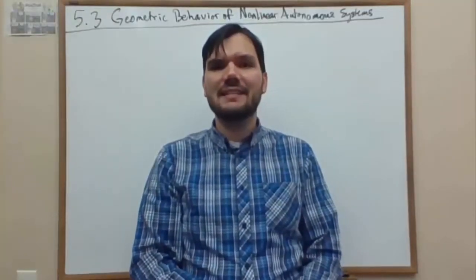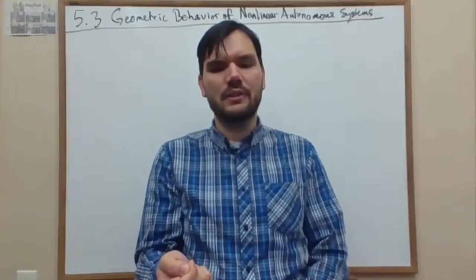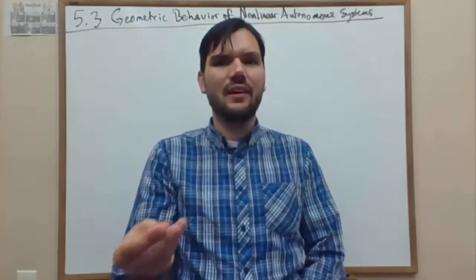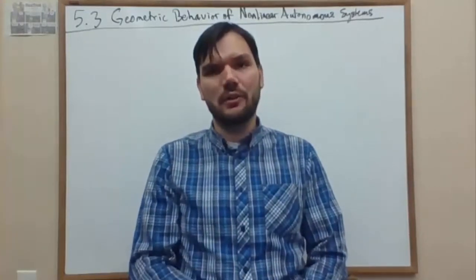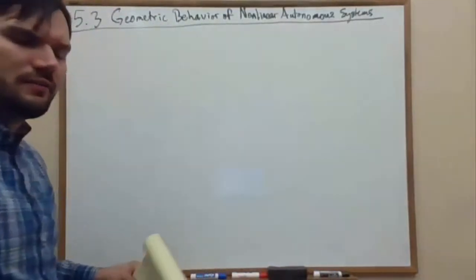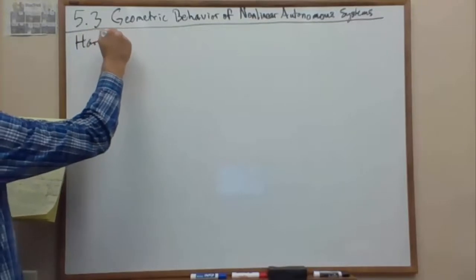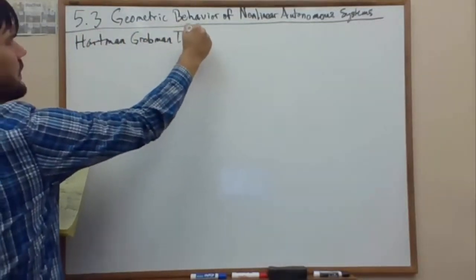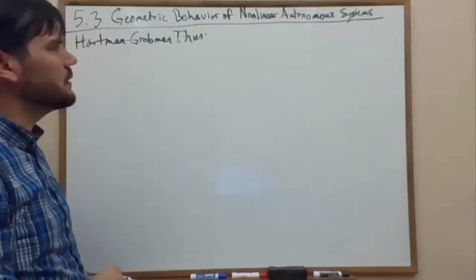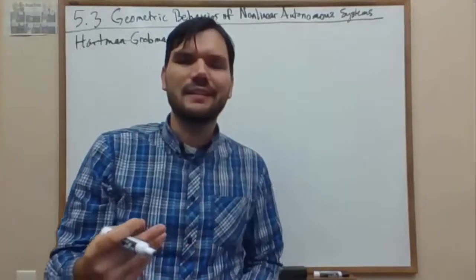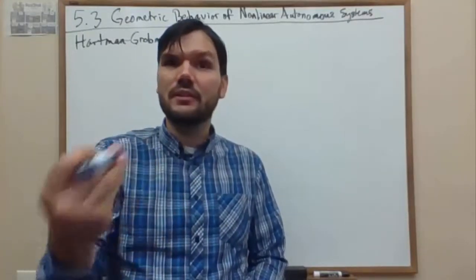Welcome back. Now we're going to look at section 5.3, which combines the equilibrium analysis we had—finding equilibrium points—with the trace-determinant plane analysis of the eigenvalues and eigenvectors, without actually calculating them, to determine the linear behavior at an equilibrium. We start off with our main reason for combining these two, and that is the Hartman-Grobman theorem. This section has quite a few named theorems that work through it, because this is kind of a culmination of the theory that our analysis is based upon.